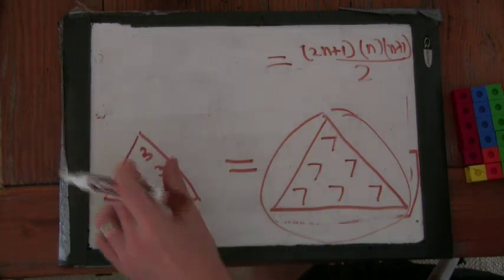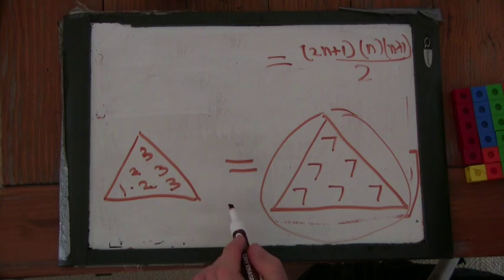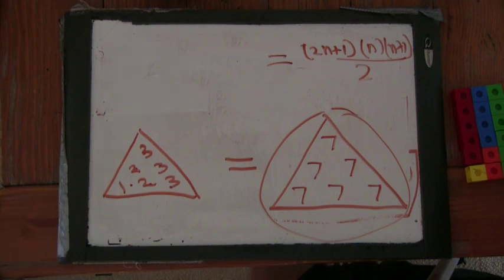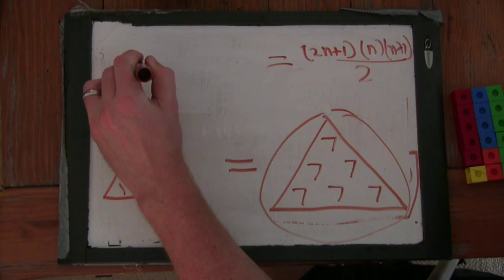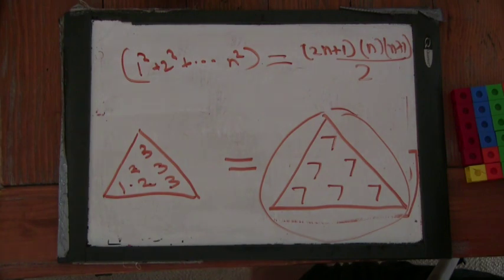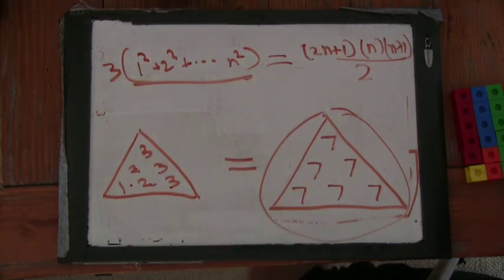So, this would add up to two n plus one times n times n plus one over two. This side over here, the numbers themselves add up to two n plus one, and there's n times n plus one over two of them. Now, what did I get on this side when I had my three triangles? What was the sum? We have one squared plus two squared up to n squared. And how many did I have? You had three. So, what does that tell me? One squared plus two squared plus three squared up to n squared equals two n plus one times n times n plus one over six. Yeah, just like we found before.